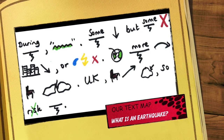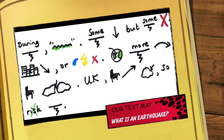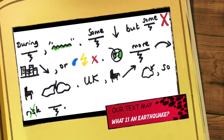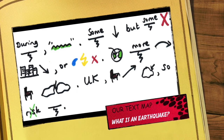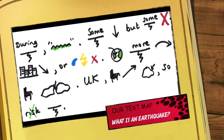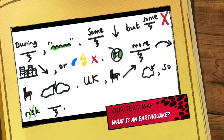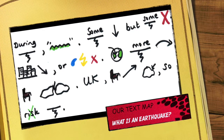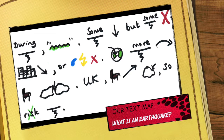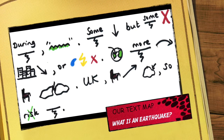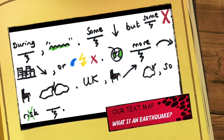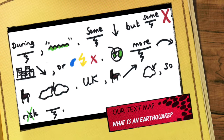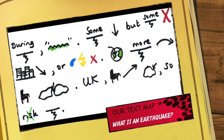During an earthquake, the ground shakes. Some earthquakes are barely felt but some can cause huge destruction. Buildings can collapse or water and electricity can be cut off. There are places in the world which have more earthquakes because they sit on the edge of the tectonic plates. In the United Kingdom, we sit far away from the edge of the nearest plate, so we are not at risk of earthquakes.